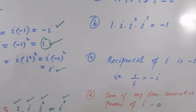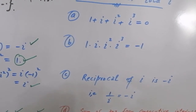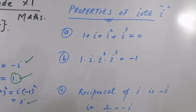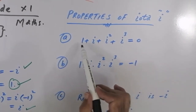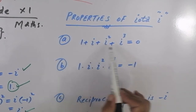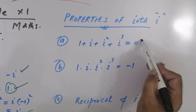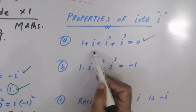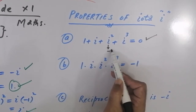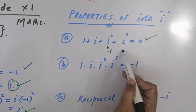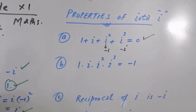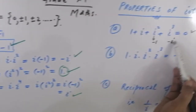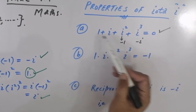اس کے بعد بہت crucial results ہیں IOTA کے حوالے سے۔ The sum of 4 consecutive powers of IOTA is always zero۔ کیونکہ: IOTA⁰ = 1، IOTA¹ = IOTA، IOTA² = minus 1، IOTA³ = minus IOTA۔ As we discussed, IOTA cube is always minus IOTA۔ تو minus IOTA اور plus IOTA cancel، اور minus 1 اور plus 1 cancel۔ The sum is zero.